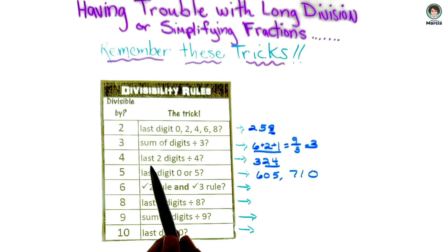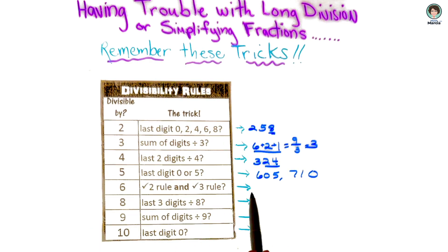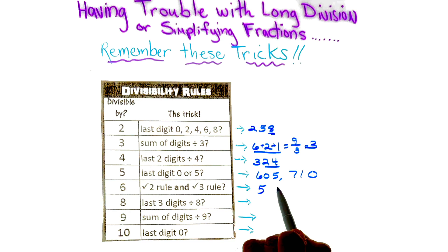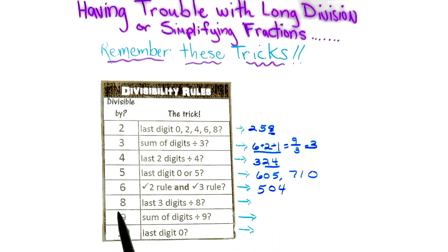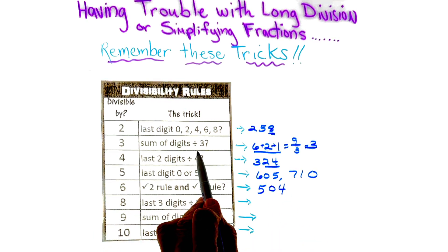So an example, rule number 2, it has to be even, okay? And I'm going to write an even number. And now rule number 3 says it has to be divisible by 3.